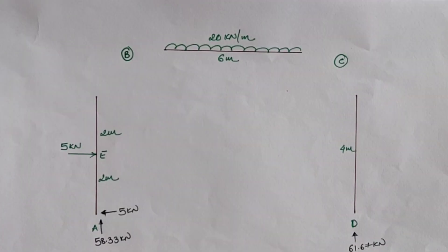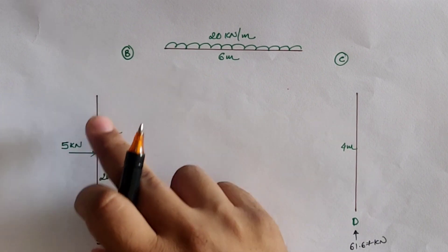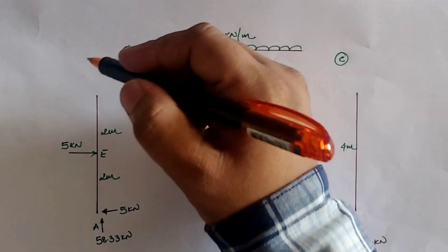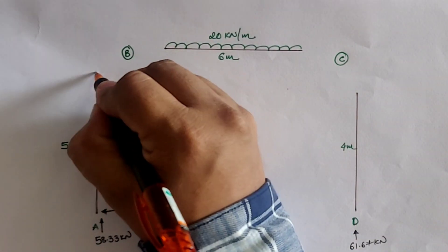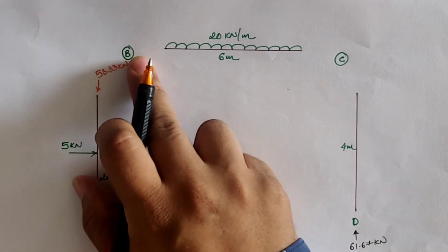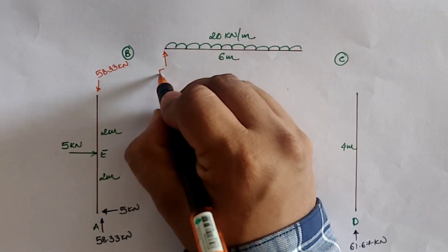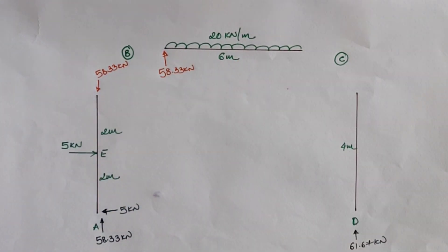After calculating the reactions, we discretize the portal frame and apply the given loads as well as the reactions. We equalize each discrete element using sigma H, sigma V, and sigma moment. For vertical loading, at location A there is 58.33 kilo Newton vertical load. To keep member AB in equilibrium, we apply an equal and opposite downward load of 58.33 kilo Newton at location B.